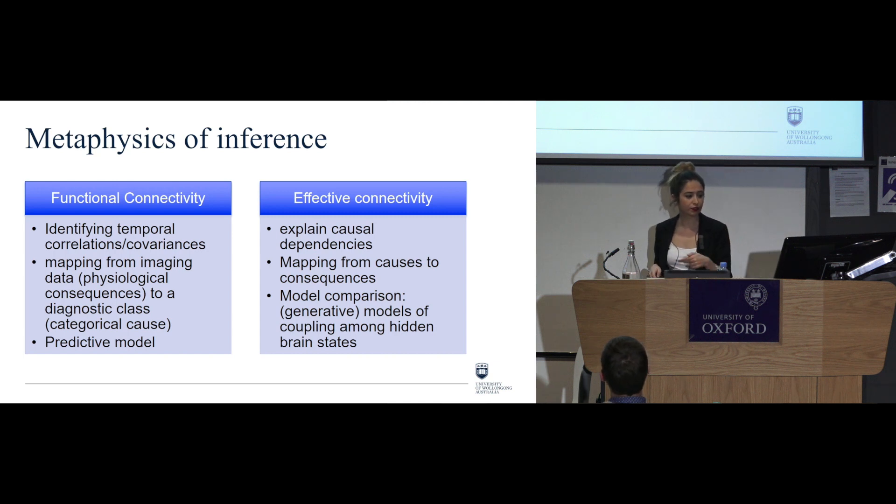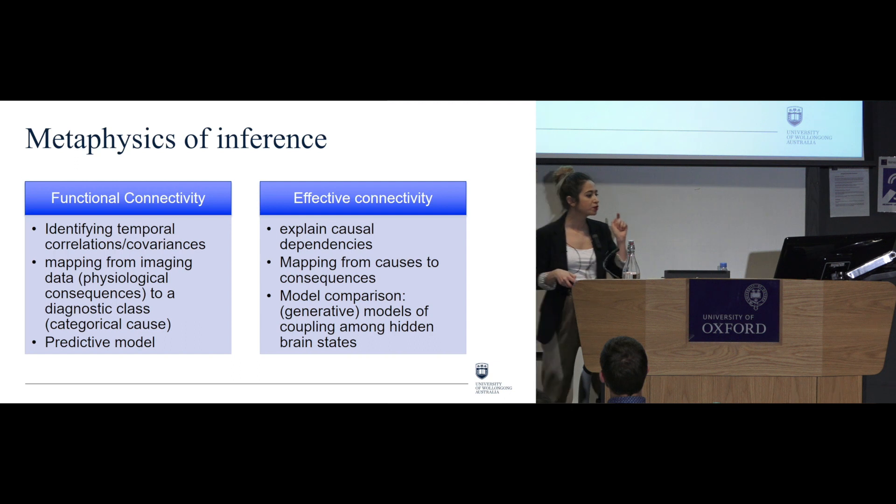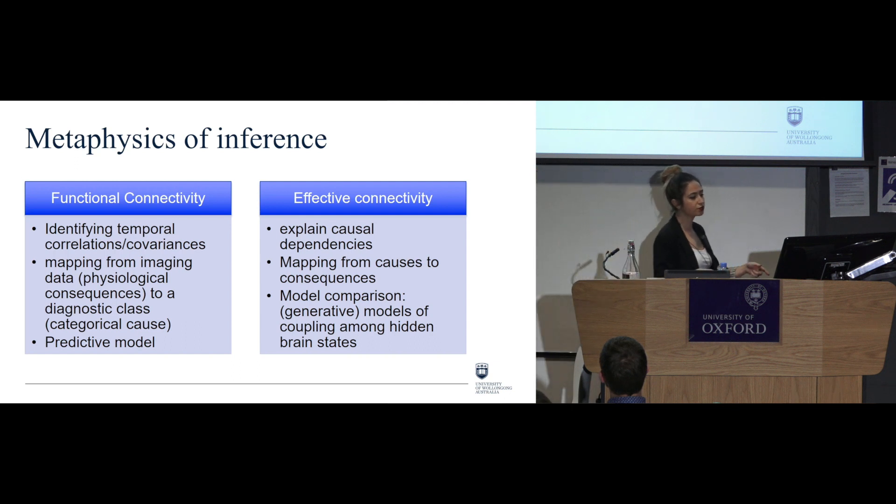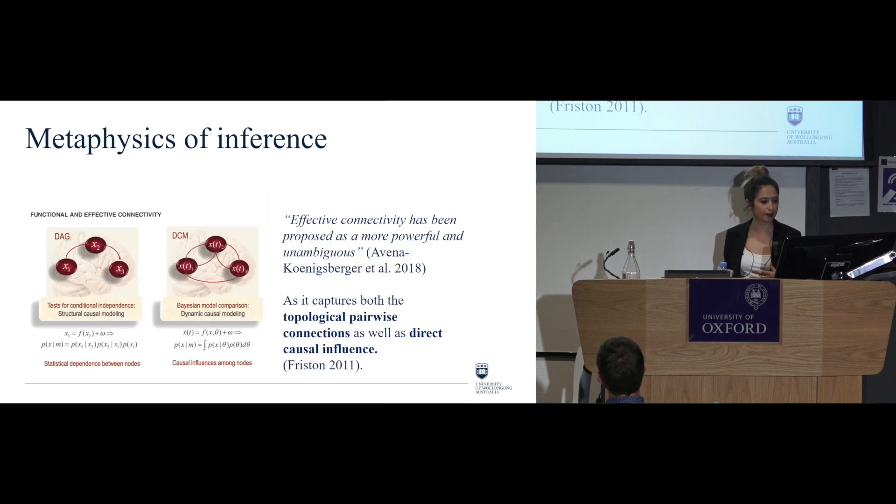On the other hand, in effective connectivity, we have mapping from causes to consequences, so the other way around. So we have on functional connectivity, a sort of a predictive model, whereas on effective connectivity, it's more of a model comparison, a generative model of coupling among hidden brain states.